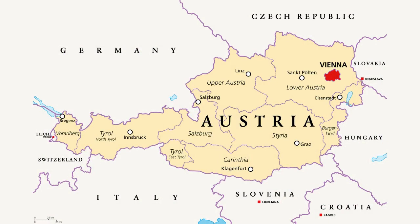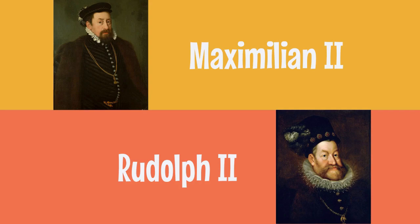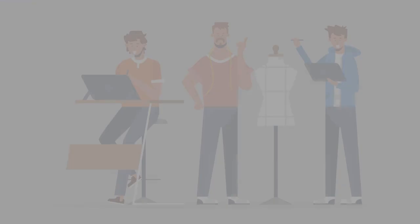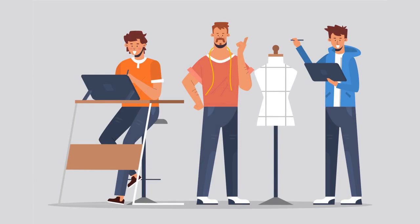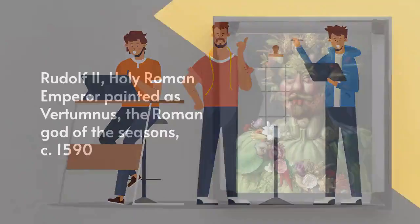He then moved to Prague, becoming a favorite court painter for Habsburg rulers Maximilian II and his son Rudolf II. Additionally, Arcimboldo served as the court decorator and costume designer.